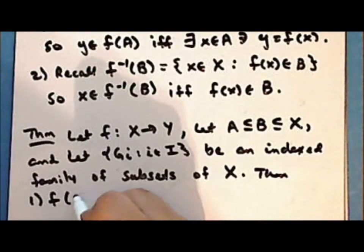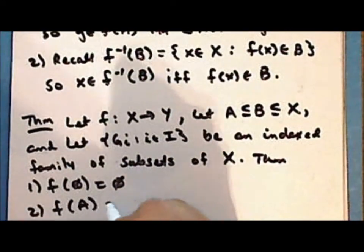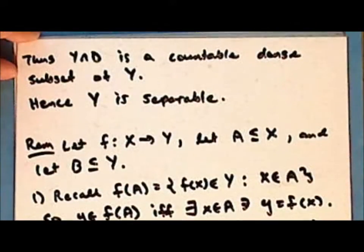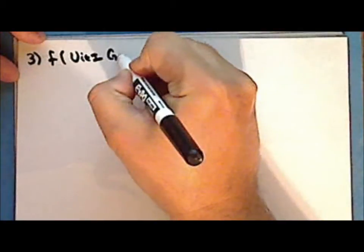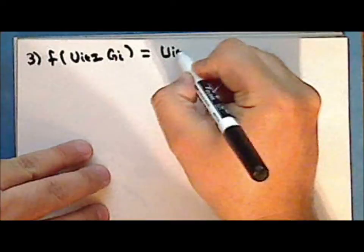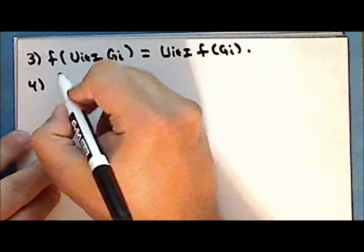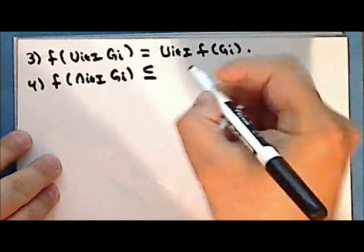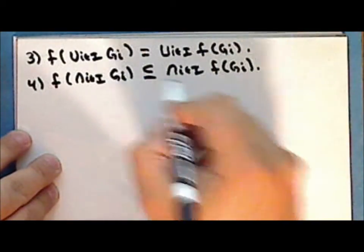Then: the direct image of the empty set is the empty set; the direct image of the set a is a subset of the direct image of the set b; the direct image of the union of subsets of the domain is equal to the union of the direct images of those subsets; and the direct image of an intersection of subsets of the domain is a subset of the intersection of the direct images of those subsets, and this inclusion can be strict.